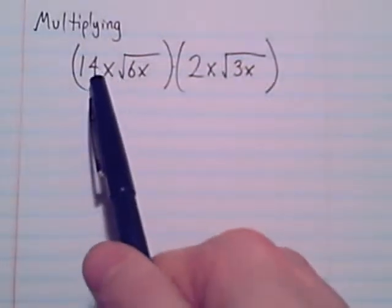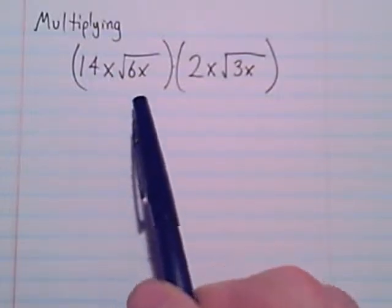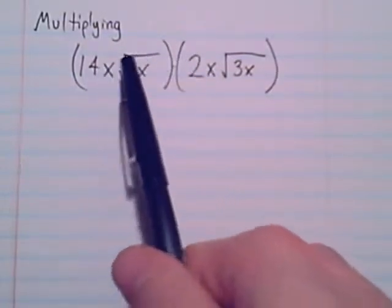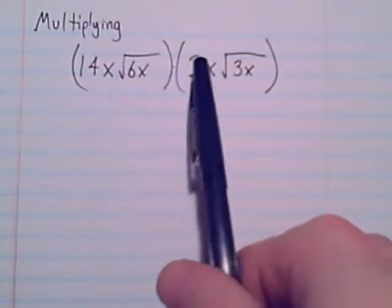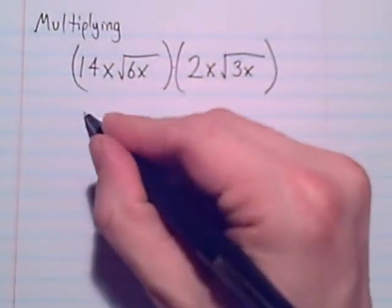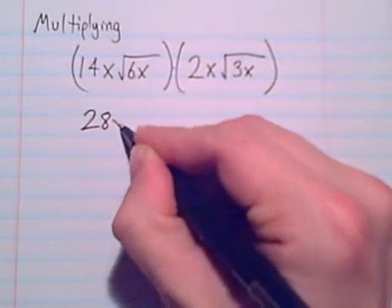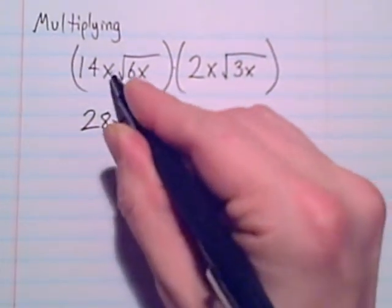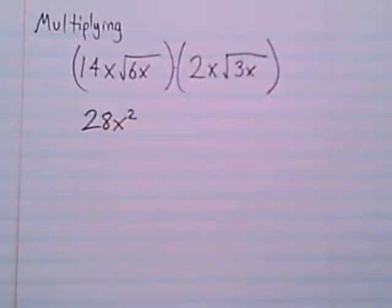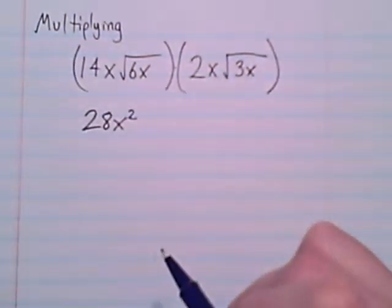So that means when I'm thinking about multiplying, I can definitely do stuff with the 14x and the 2x because they are both outside of a radical. Those two can definitely be multiplied together under our same rules. So 14x times 2x multiply the coefficients, 28, and x times x is x squared. Again, when we're multiplying, we're definitely changing the variable, not like when we're combining like terms.